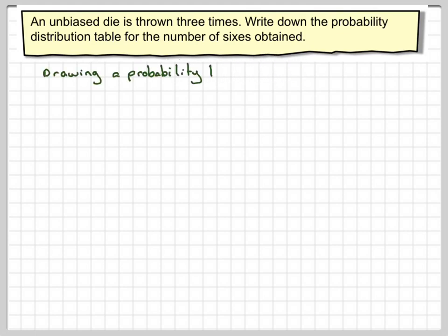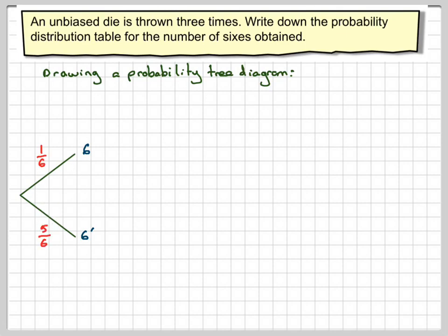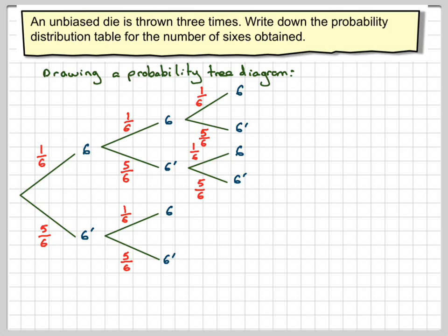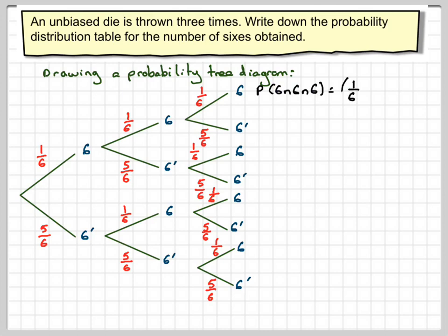If we draw a probability tree diagram, in the first throw we can get a six or not a six — the probabilities are one-sixth and five-sixths. On the second throw, having got a six, again we can get a six or not a six: one-sixth and five-sixths. Having not got a six on the first throw, on the second throw we can again get a six or not a six: one-sixth and five-sixths. That process carries on for the third throw.